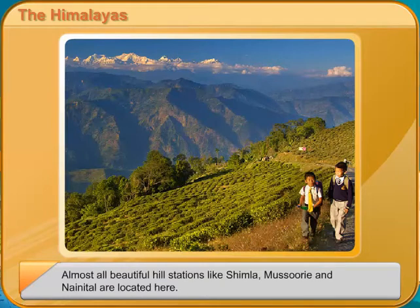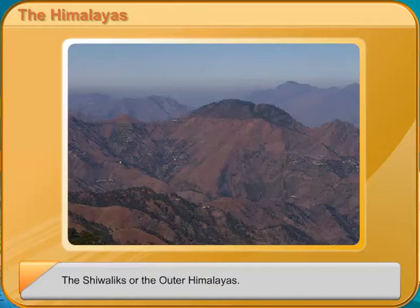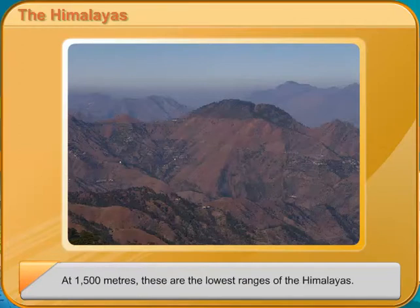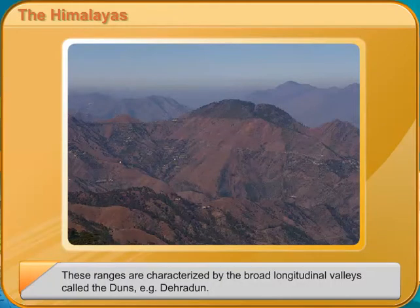The Shivaliks, or the Outer Himalayas, at 1500 meters, are the lowest ranges of the Himalayas. These ranges are characterized by broad longitudinal valleys called the Doons — for example, Dehradun.